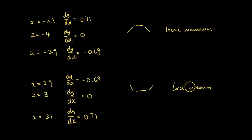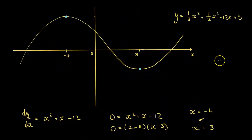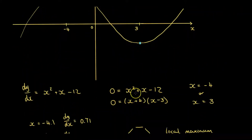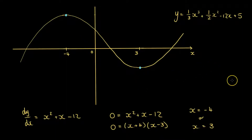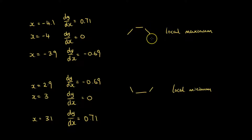So that is the first way of finding out whether an x value corresponds to a local maximum or a local minimum. When we solved our gradient equation equal to 0 and found the two x values, we didn't know whether each was a maximum or a minimum. But by testing points either side and sketching out those gradients, we can determine whether it's a local maximum or a local minimum.